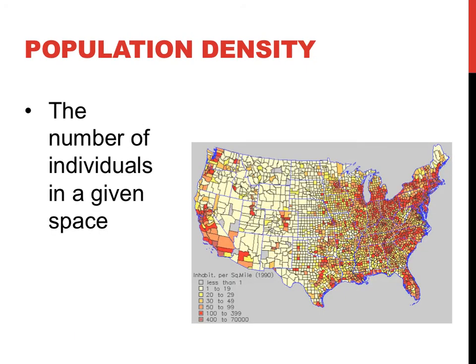Population density is defined as the number of individuals per unit area or unit space. This graphic shows the population density of every county in the United States. As you can see in the picture, the population density in each county differs significantly, from less than one person per square mile to nearly 70,000 people per square mile. The human population is clumped, as you see in this picture, around bodies of water.